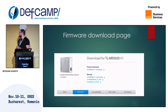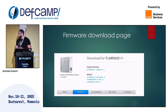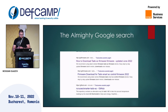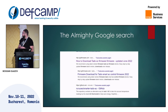A few examples. Here we have the official firmware download page from TP-Link — we see a TP-Link router model. Here we can see how Google can help us find the firmware for the Tado Smart AC Controller.